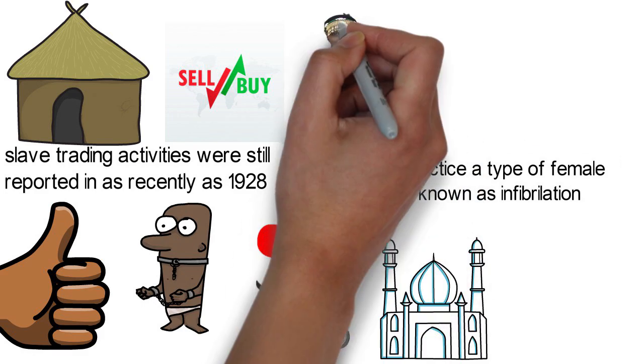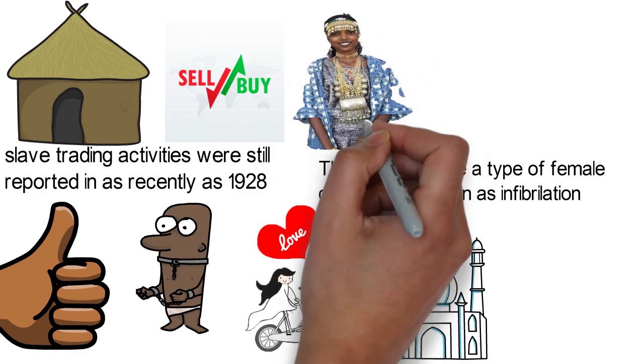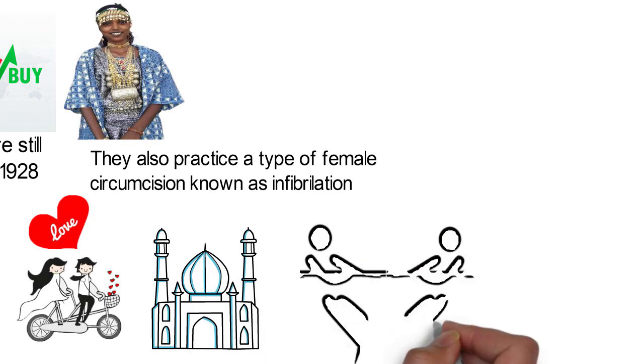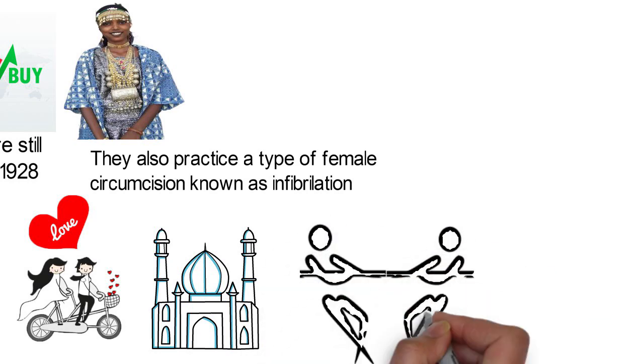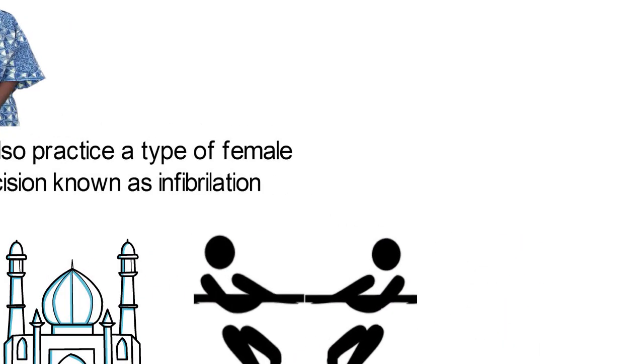Afars generally keep to themselves and are usually suspicious of strangers. They are quite aggressive and warfare has been the primary contact for most of the culture.